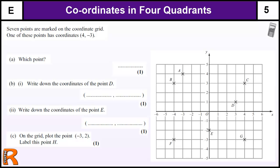Here we have a question of coordinates in the four quadrants. It's a Grade E GCSE question, or Grade Level 5 National Curriculum. What makes it Grade E and Level 5 as opposed to Grade F and Level 4 is the fact that we have coordinates in both negative and positive directions, giving us four quarters. This is the first quadrant where everything is positive, the second quadrant, and we go round anti-clockwise for the third and fourth quadrants. Quadrants are just quarters of the coordinate grid.